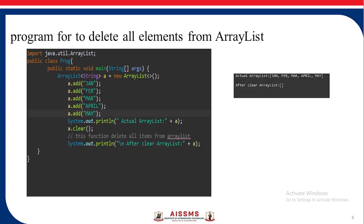There is another program which shows how to delete elements from an ArrayList. A class PROG is created; an ArrayList is created and values Jan, Feb, March, April, May are added. After displaying the actual ArrayList, we use the method clear(), which deletes all items from the list. After that, when we write the print statement, we get no values in that ArrayList.